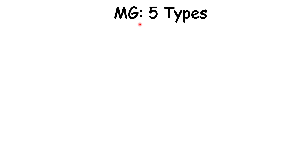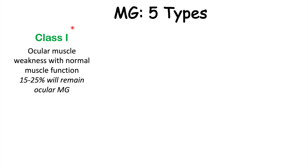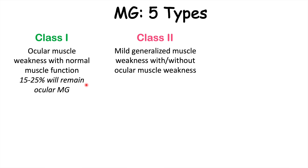There are five classes of myasthenia gravis, from one to five, one being the least severe and five being the most severe. Class one is when there is ocular muscle weakness with normal muscle function — most patients start with extraocular muscle weakness and then progress to generalized myasthenia gravis. However, roughly 15 to 25% of patients will remain in class one with only ocular myasthenia gravis.